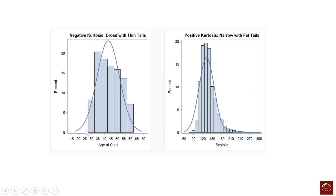We also have another concept called kurtosis, which refers to the peakedness of the data — how peaked the distribution is. With negative kurtosis, you will have a broad distribution with thin tails, ending very quickly. With positive kurtosis, the distribution is narrower but with fat, longer tails.